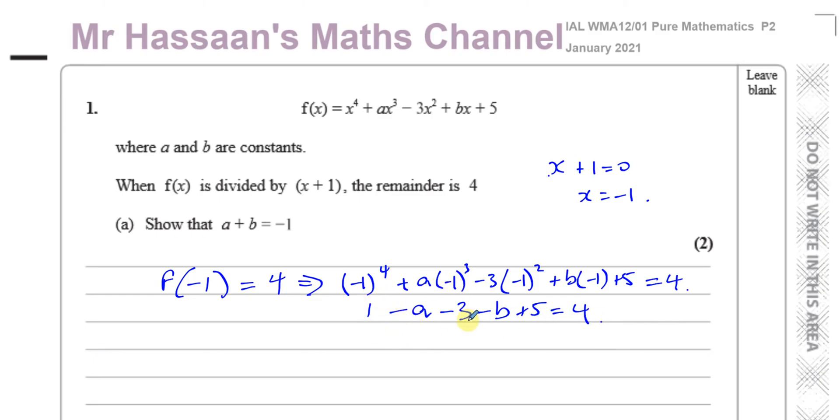So now if we simplify this, we got 1 - 3, which is -2. -2 + 5 is 3, so you have -a - b + 3 = 4. -a - b is equal to 4 - 3, which is 1.